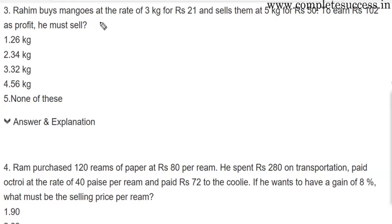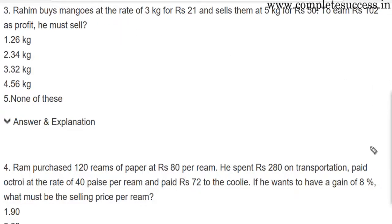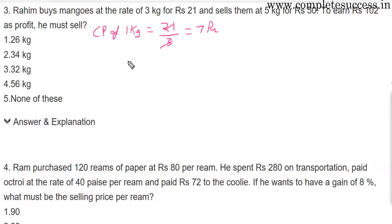Raheem buys mangoes at the rate of 3 kg for Rs.21 and sells them at 5 kg for Rs.50. To earn Rs.102 as profit, how many kg must he sell? The cost price of 1 kg is 21 divided by 3, which equals Rs.7. The selling price of 1 kg is 50 divided by 5, which equals Rs.10.